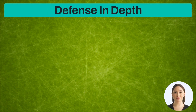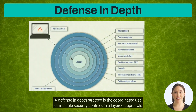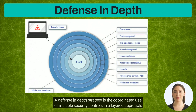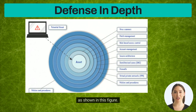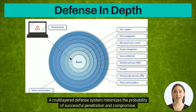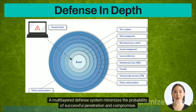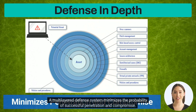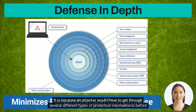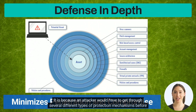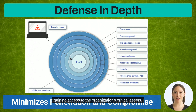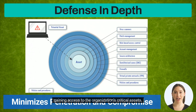These control types must be put into place to provide defense in depth. A defense in depth strategy is the coordinated use of multiple security controls in a layered approach, as shown in this figure. A multi-layered defense system minimizes the probability of successful penetration and compromise, because an attacker would have to get through several different types of protection mechanisms before gaining access to the organization's critical assets.